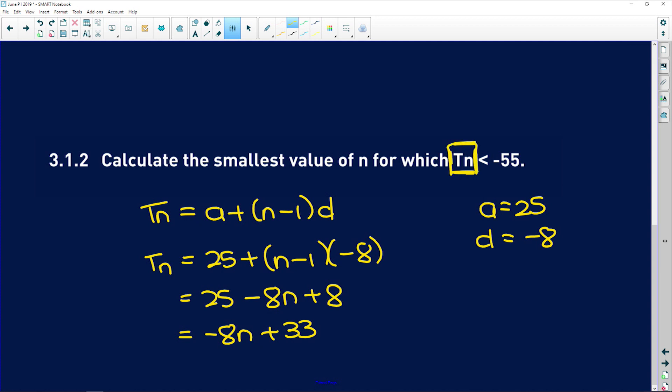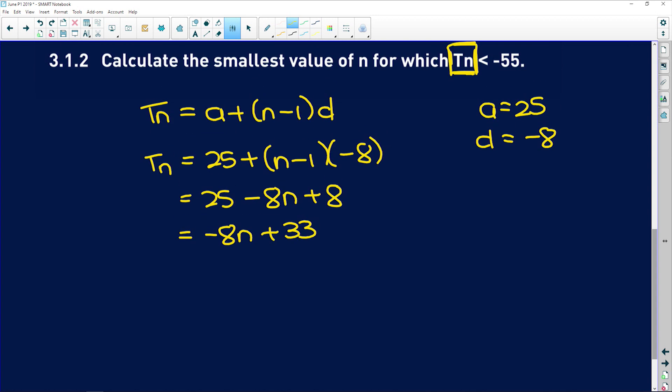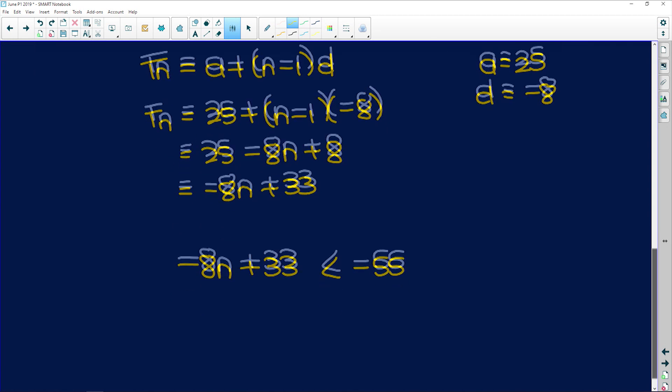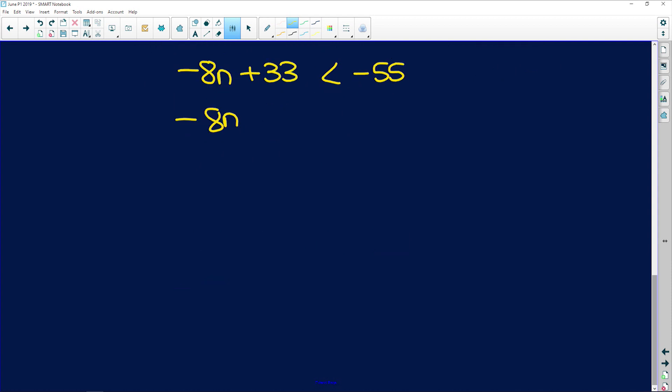Now we need to find where tn starts getting smaller than negative 55. Just treat it like an inequality. We have negative 8n plus 33 is less than negative 55. So we get negative 8n, if we subtract 33 from both sides, is less than negative 88.